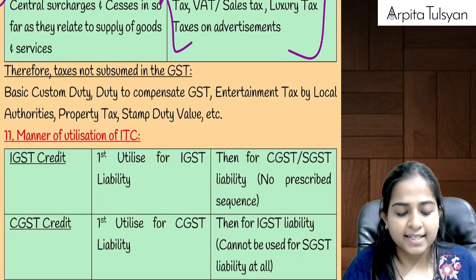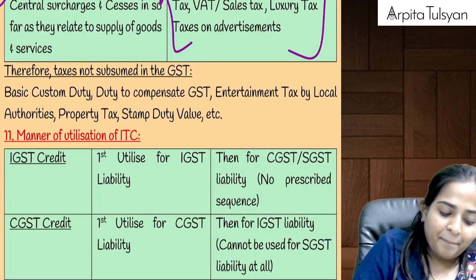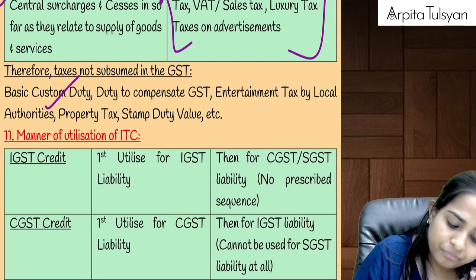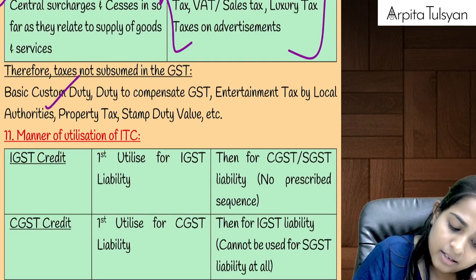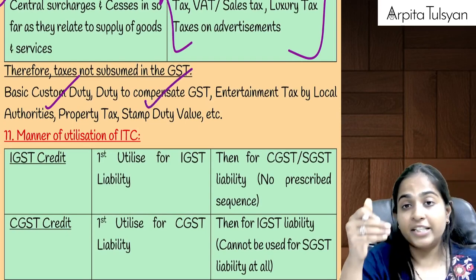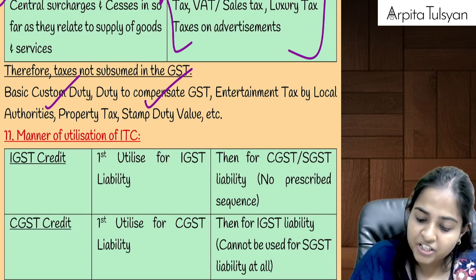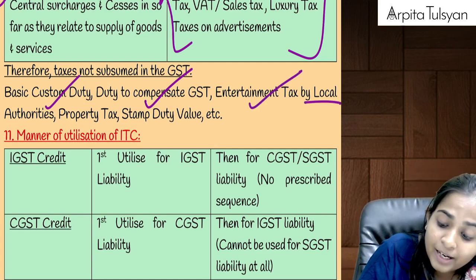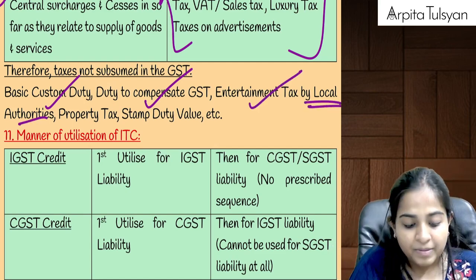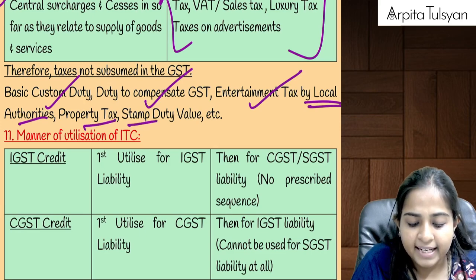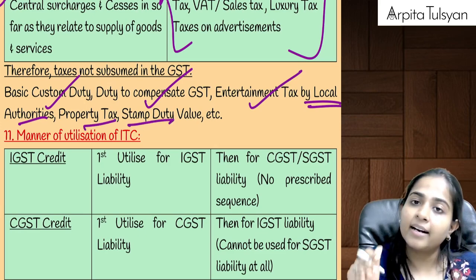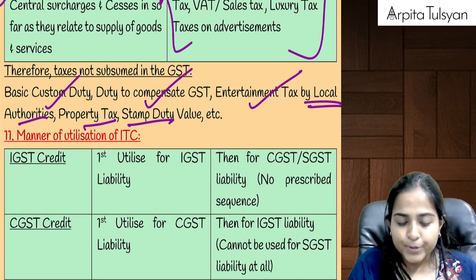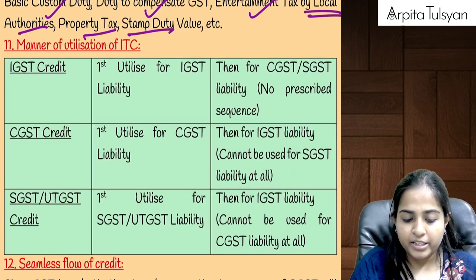Which taxes are left — not subsumed? Basic custom duty, duty to compensate GST, GST Compensation Cess, entertainment tax by local authority, property tax, stamp duty, etc. These are still prevailing and are not subsumed in GST.